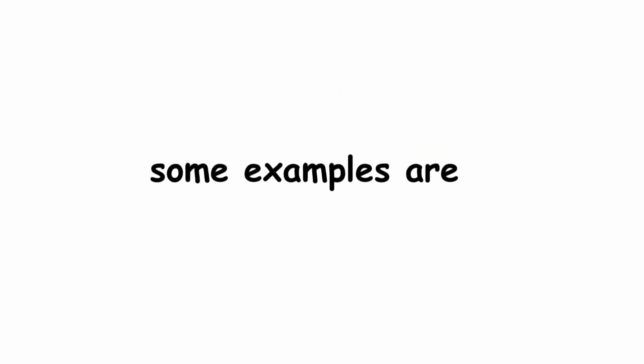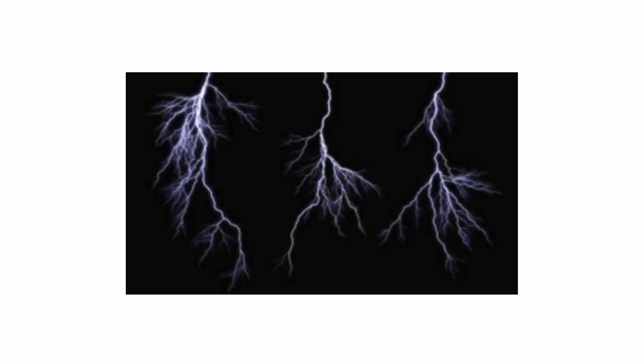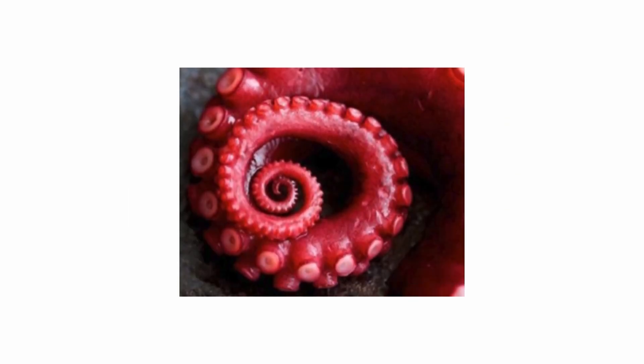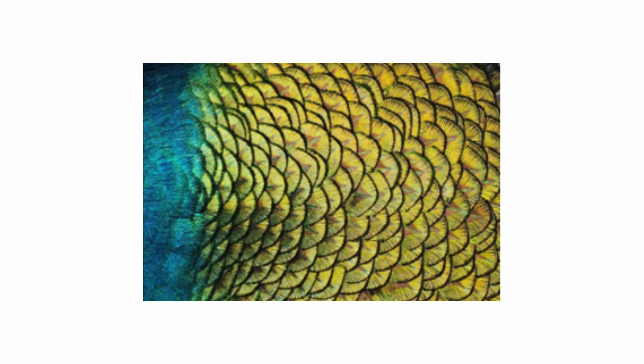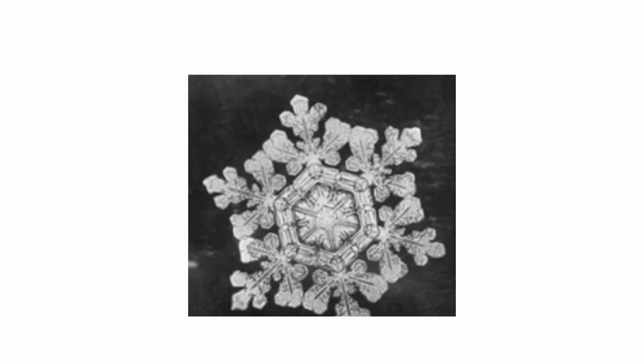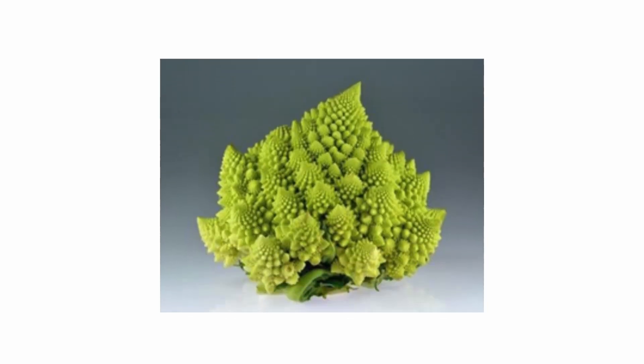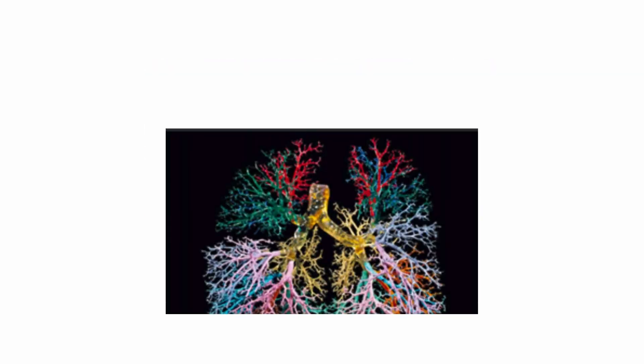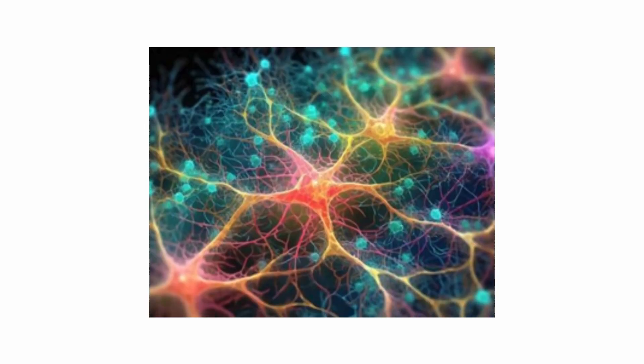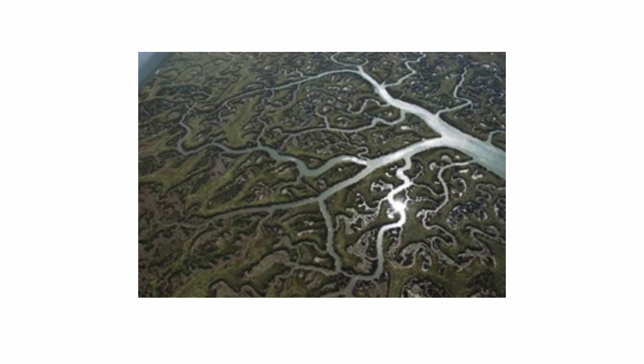Some examples are tree branches, lightning, octopus tentacles, leaves, ferns, peacock feathers, snail shells, snowflakes, romanesco broccoli, the great wave of Kanagawa, lungs, neural networks, river networks, and coasts.